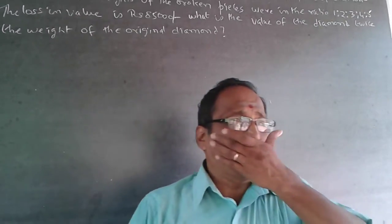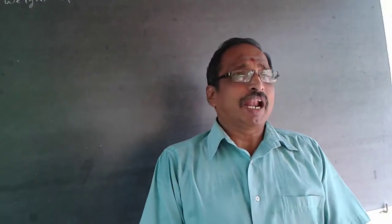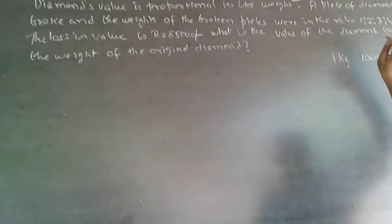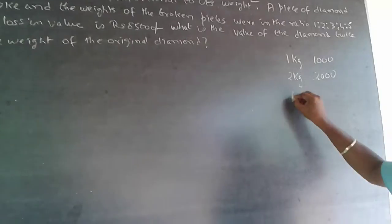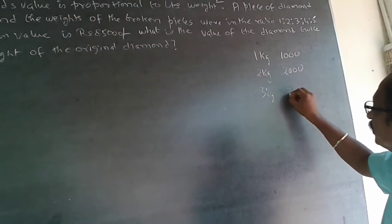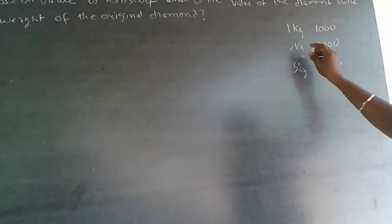This is a quantitative aptitude question on ratios and proportions. The diamond's value is proportional to its weight squared. To understand proportionality: if 1 kg of something is 1000 rupees, then because it is proportional, 2 kg will become 2000 and 3 kg will become 3000.